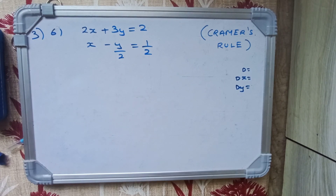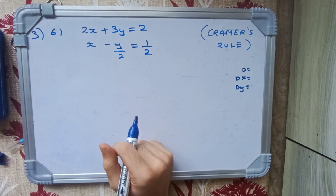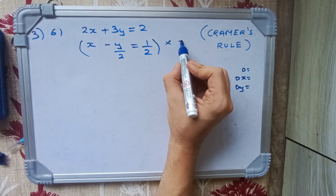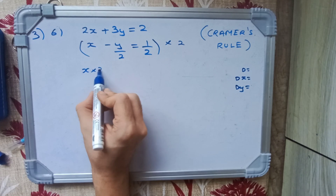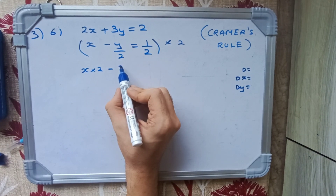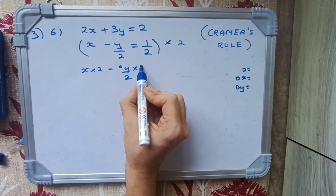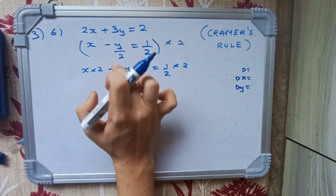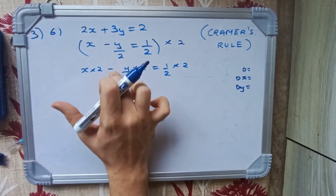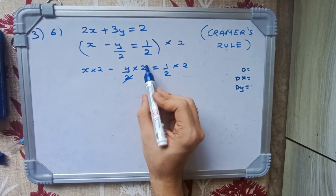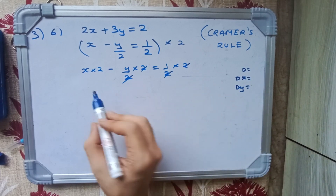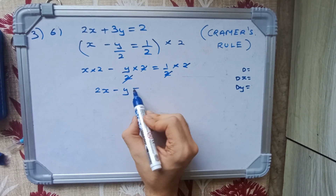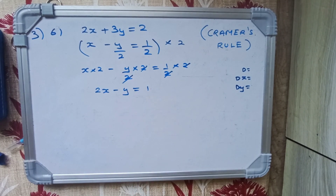Next sum: the second equation has a fraction. What you have to do is multiply the entire equation by 2 to eliminate the denominator. Multiplying through: 2x minus y equals 1. So now it looks like a proper equation. We take this as equation 1 and the new simplified form as equation 2, then solve normally.